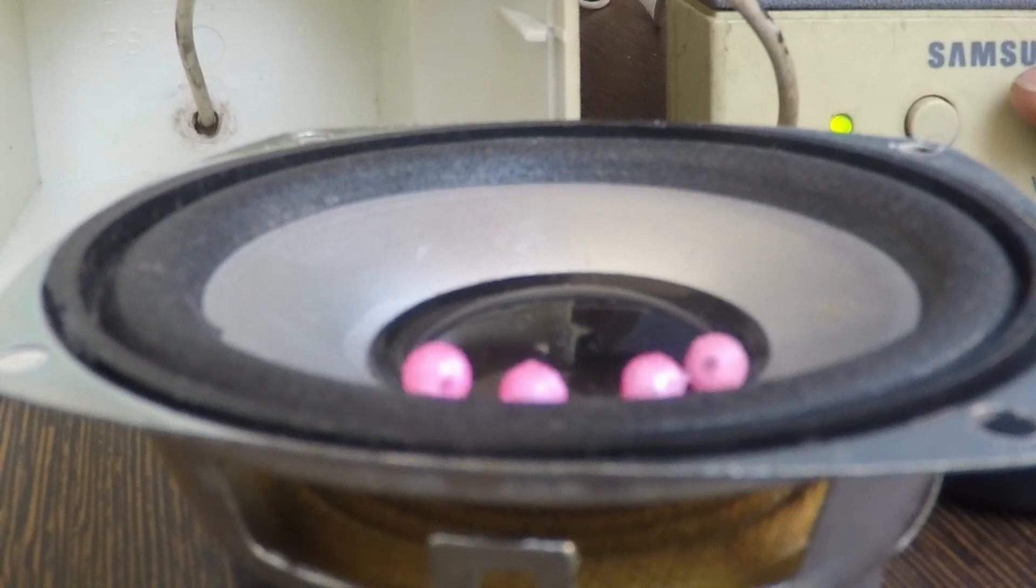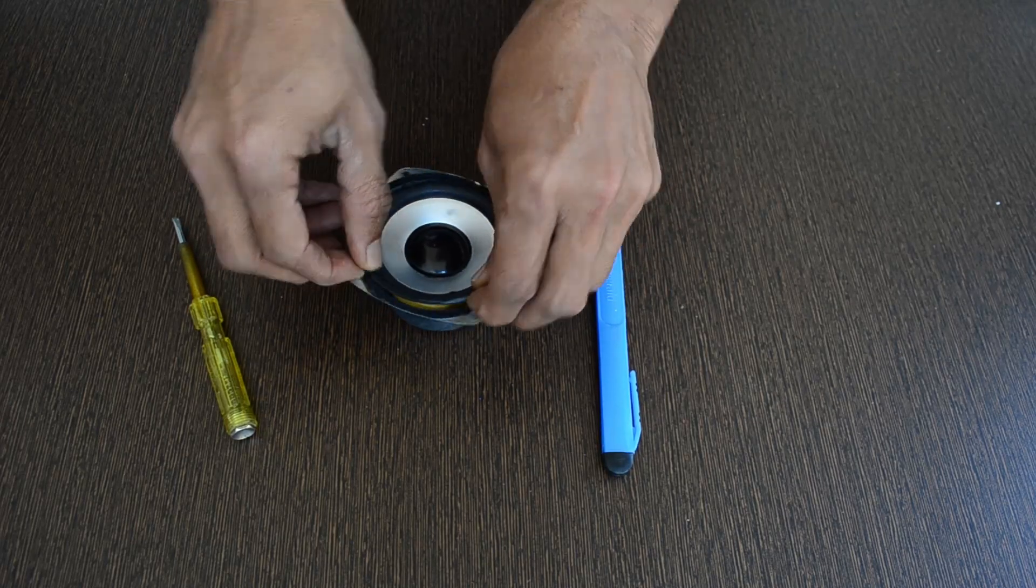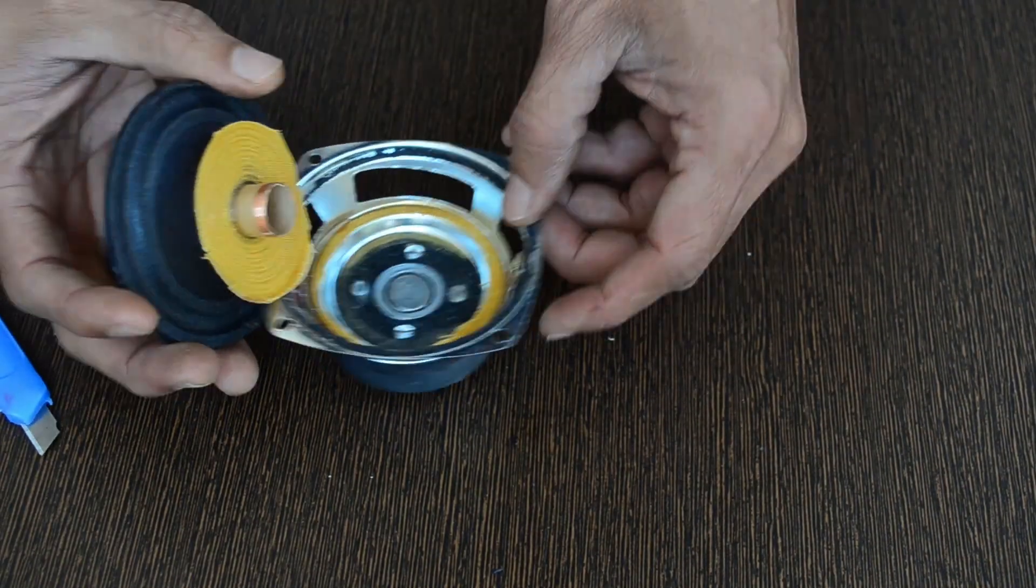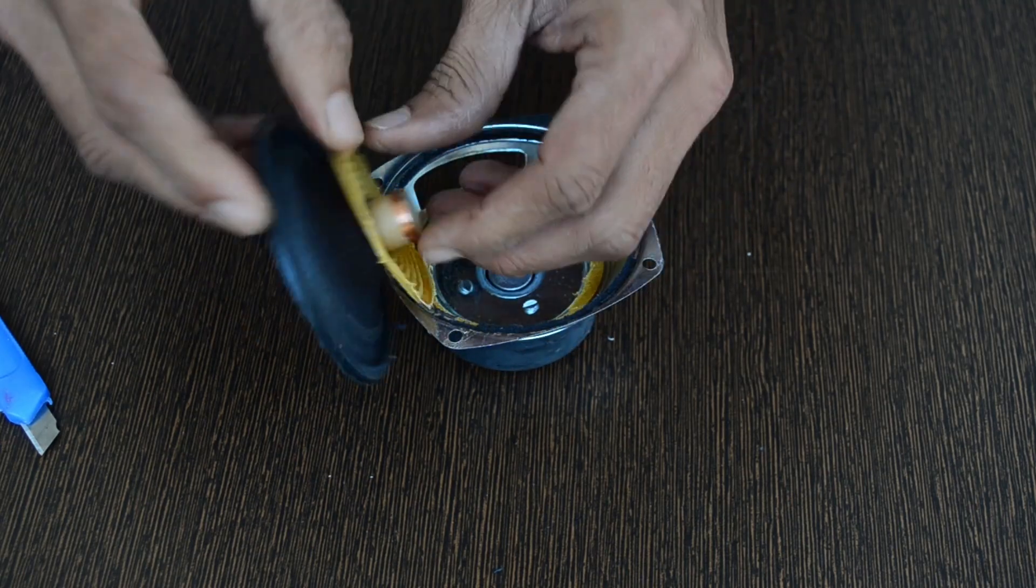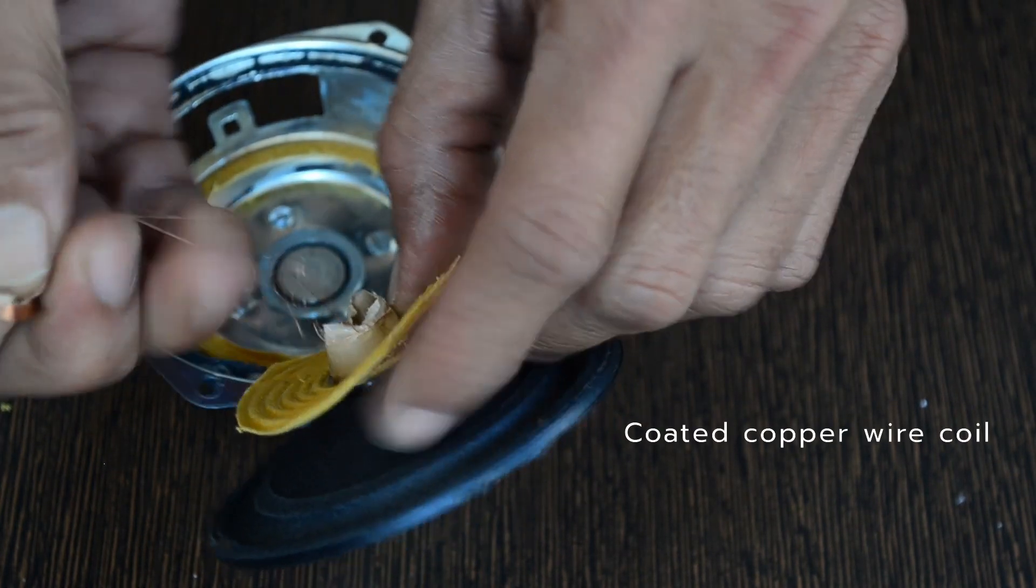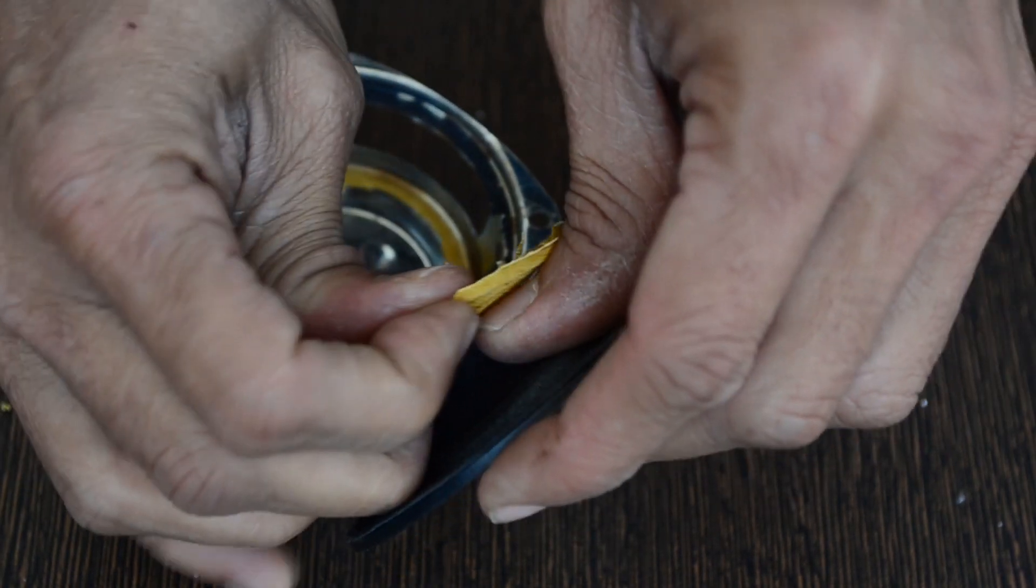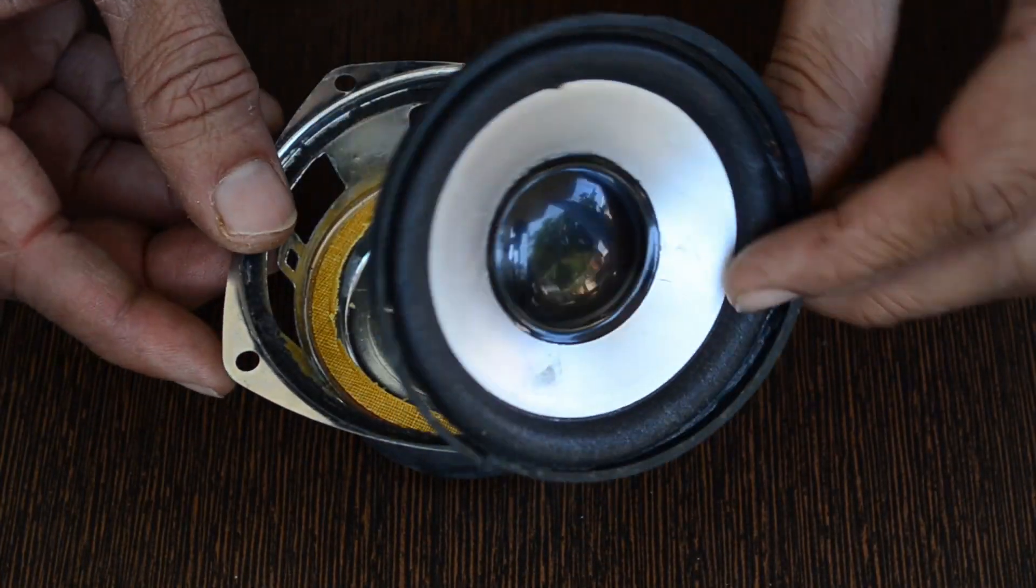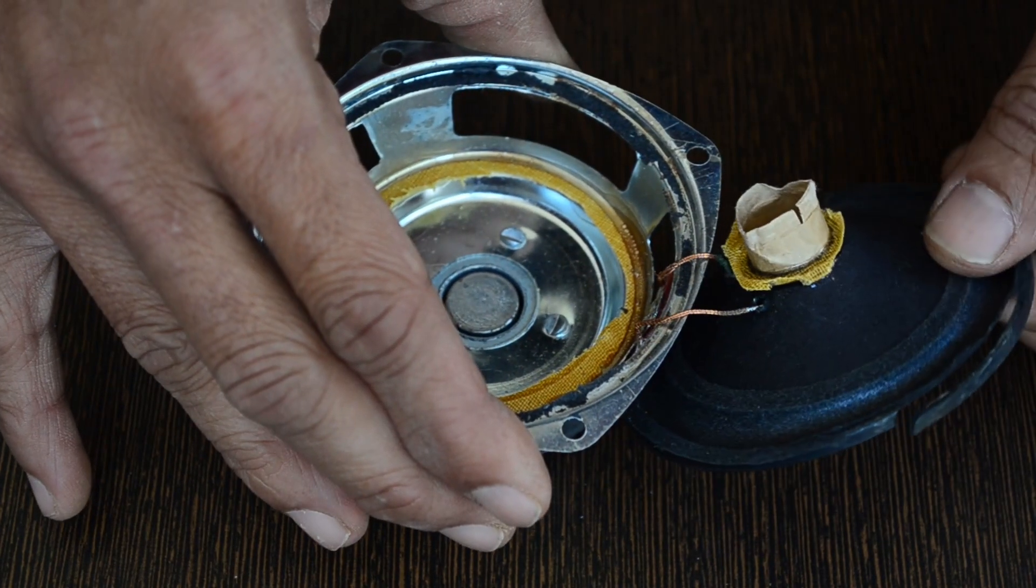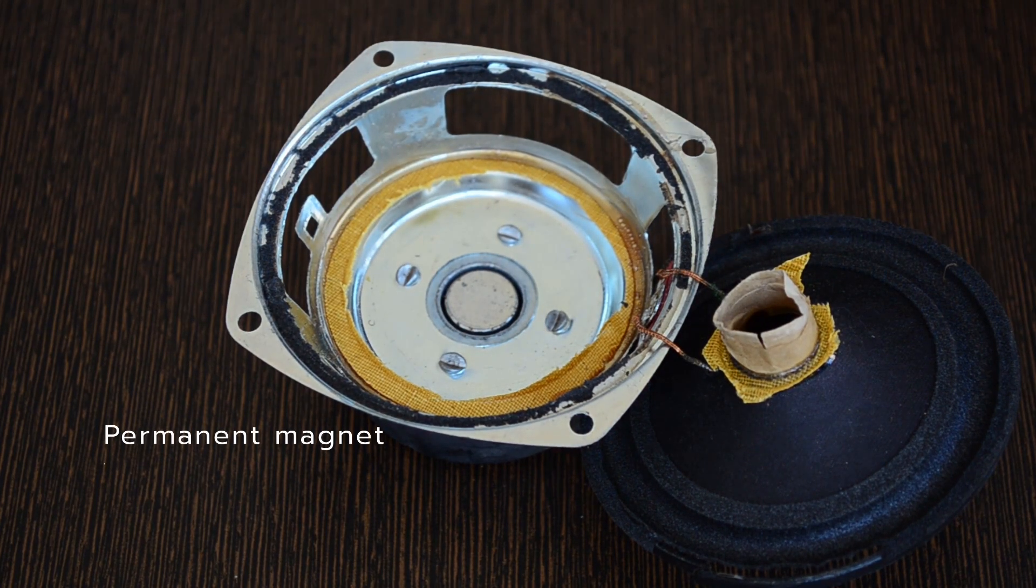Let us find out what is inside the speaker. This small coil is attached to a paper membrane. It is made up of thin coated copper wire. This is a permanent magnet.